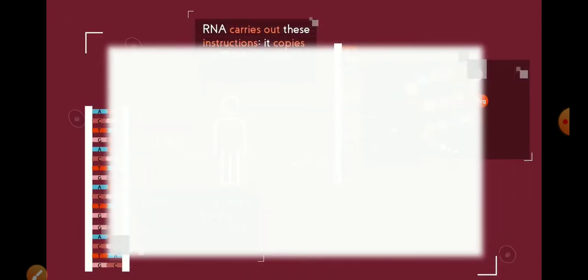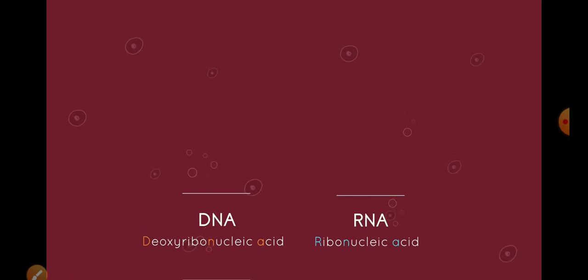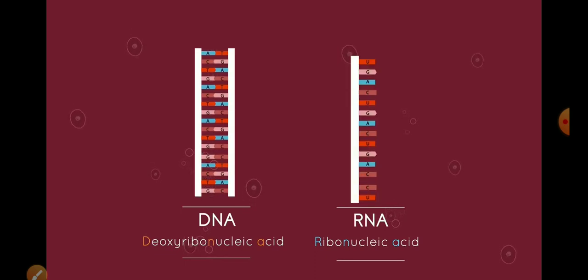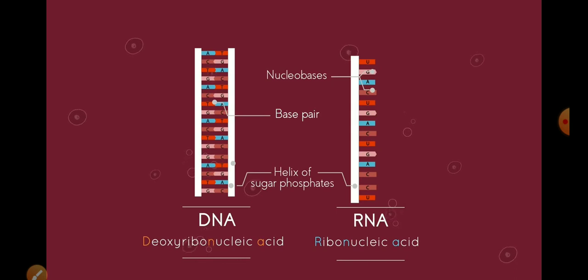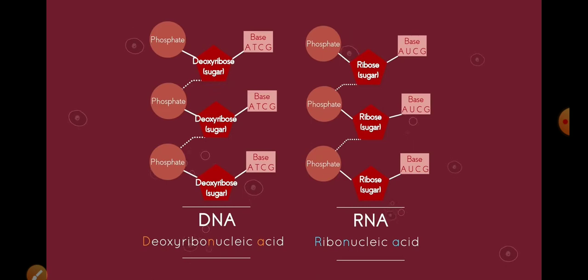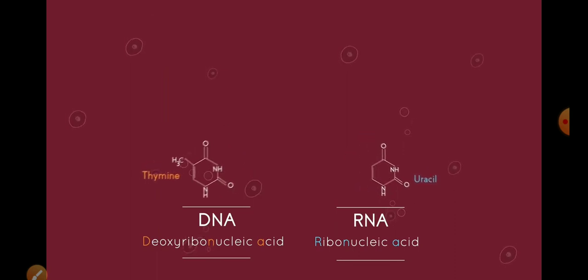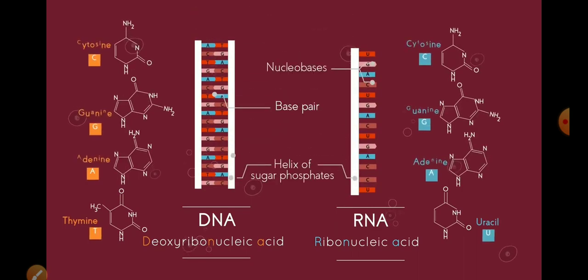The RNA carries out these instructions. It copies and transfers the genetic code from the DNA to ensure the relevant proteins are made. So, just think of it as DNA makes RNA makes proteins. So, let's look at how they differ. Whereas DNA stands for deoxyribonucleic acid, RNA stands for ribonucleic acid. Whilst DNA is double stranded, RNA is single stranded. Like DNA, RNA is made up of a long chain of nucleotides. Each nucleotide consists of a ribose sugar, phosphate group and nucleotide base. RNA has a sugar called ribose, whereas DNA has a sugar called deoxyribose. Look here. RNA has a base uracil or U, whereas DNA has the base thymine or T.